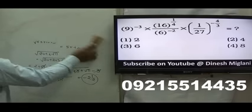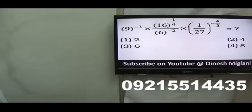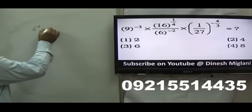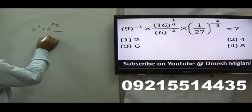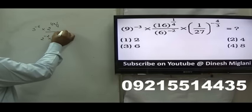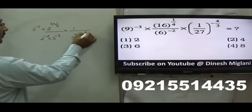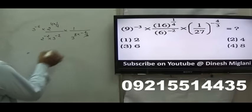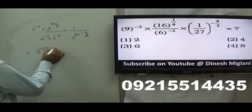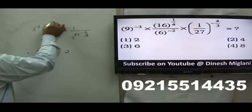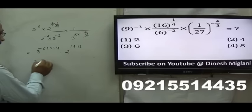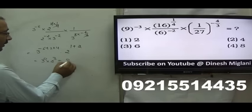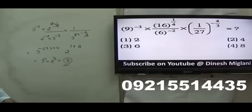Next question: we have to solve this. We convert everything into base 2 and 3. So 3^(−6) · 2^4 · (1/4), divided by 6 as 2^(−2) · 3^(−2) · (1/3)^3 · (−4/3). After cancellation: 3^(−6 + 2 + 4) = 3^0, and 2^1 · 2^2 = 2^3. So the answer is 3^0 · 2^3 = 8. Hence the fourth option, 8, is my answer.